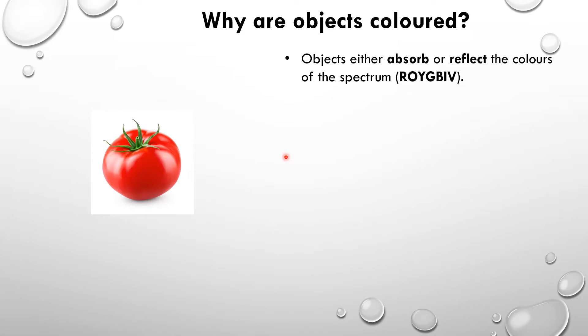As we talked about in an earlier video, white light that we see in everyday life is made up of a range of different colours, from red all the way to violet.